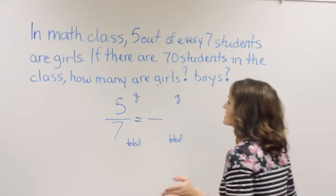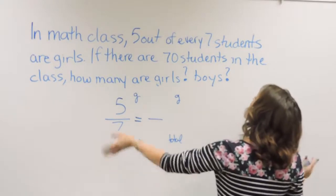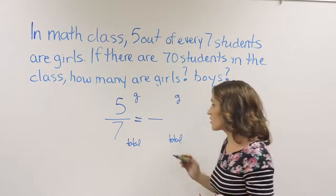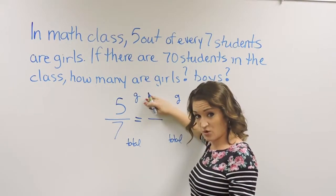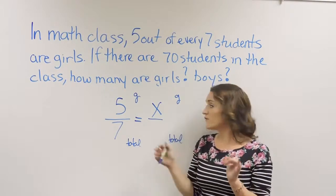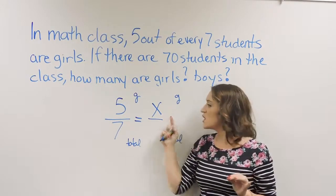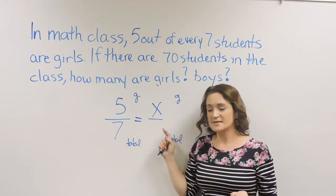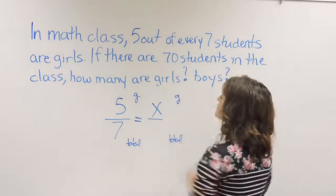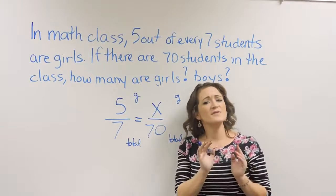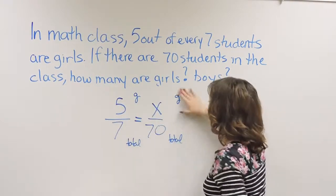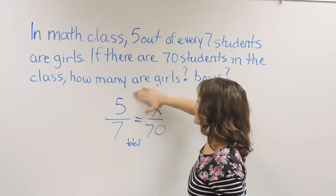Now pay attention to the question they ask. They say, if there are 70 students in the class, how many are girls? We're trying to solve for how many girls there are in total. Our numerator is what we're solving for, so we're going to label that as X. The denominator represents the total, which they give us: 70 students. So 5 is to 7 as X is to 70. This is our setup for this problem: 5/7 = X/70.